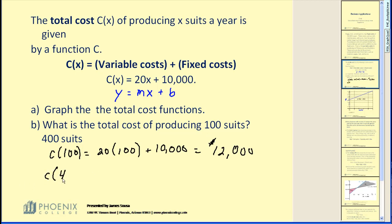For C of 400, same process. It would be 20 times 400 now, plus the fixed cost of 10,000, which is going to be 8,000 plus 10,000, 18,000, the same as what the graph showed. Again, I'm just doing the substitution into the cost function.